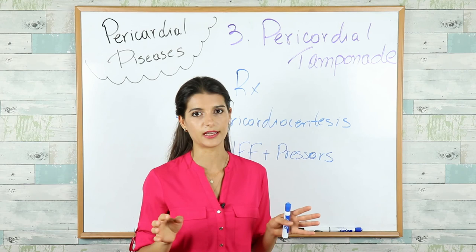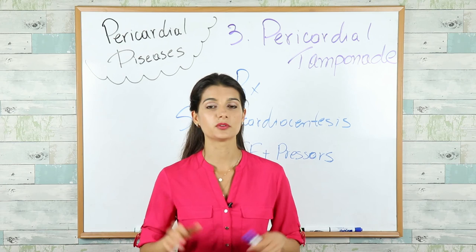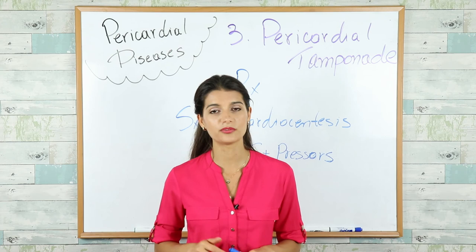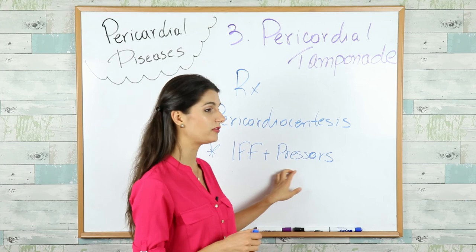Remember: in constrictive pericarditis, give diuretics to decrease volume overload. But in pericardial tamponade, give the opposite — IV fluids and even pressors before performing pericardiocentesis. This concludes our pericardial diseases video. Thank you very much for watching.